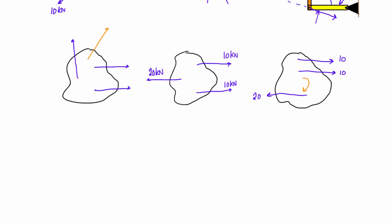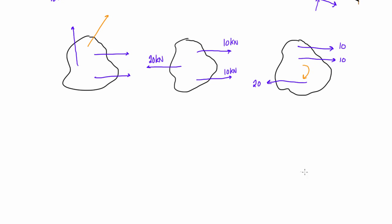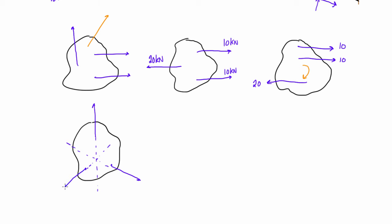The other way to get an object with three forces in static equilibrium is if those forces are concurrent. If we draw an object with a force going straight up, a force going off in another direction, and their lines of action are concurrent, and a third force completing the arrangement — say all three angles are 120 degrees and all magnitudes are 10 kilonewtons — this object would be in static equilibrium. The forces cancel out, and because all lines of action pass through the same point, no force couples are created and the object won't rotate.